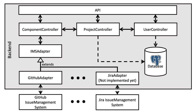This way, using the adapter pattern, Gropius can handle every issue management system an adapter exists for. Simply, another adapter must be implemented to support a new issue management system in Gropius. Depending on the issue management system, Gropius uses the user's access token or credentials to authenticate or even access an app for the issue management system.